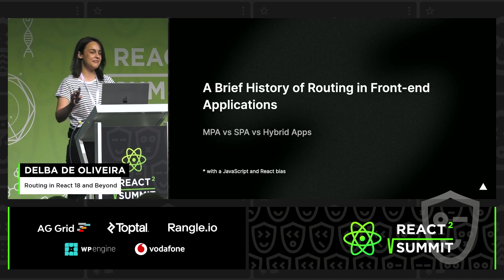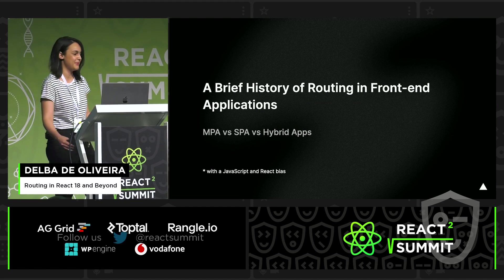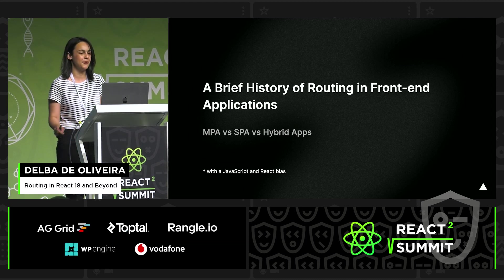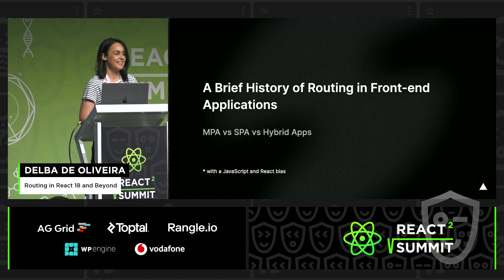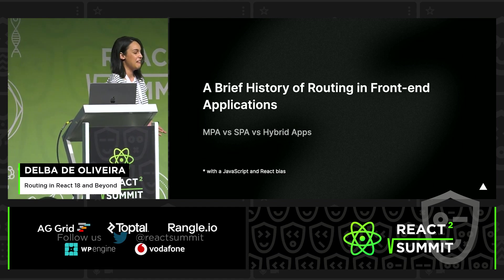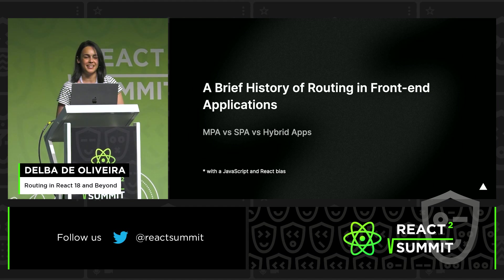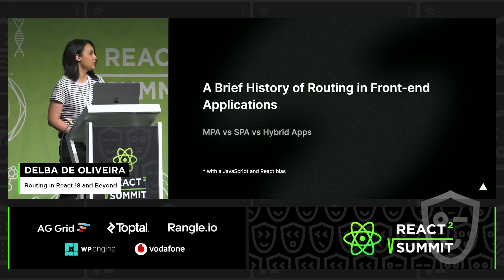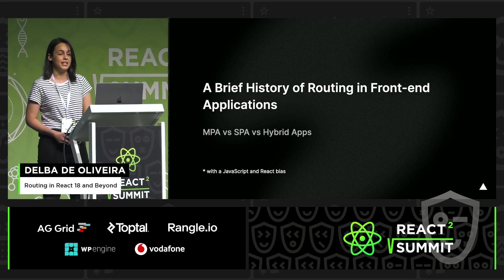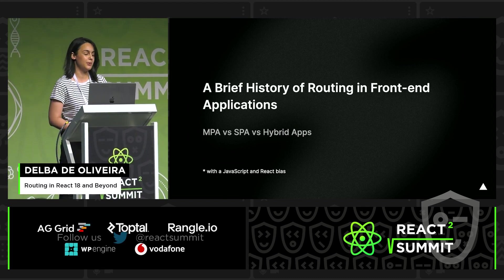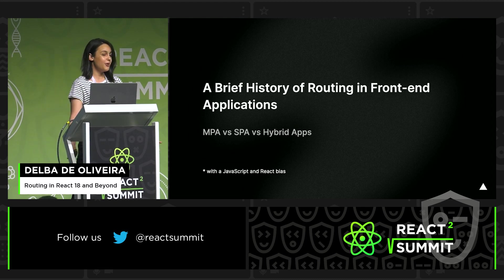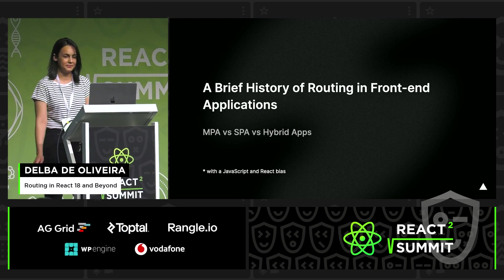Now, to give everyone some context, I think it's important to just take a step back and look at how routing has evolved in front-end applications. Please note I'm going to be condensing years of routing history in like five minutes, so there's a lot more nuance. One way we can look at routing is through the type of applications we can build: multi-page applications, single-page applications, and more recently, hybrid apps.